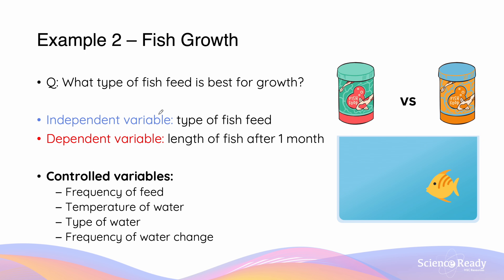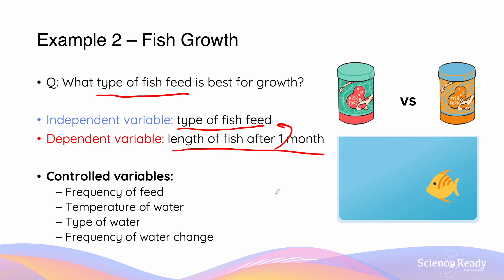In this scenario, we are going to be investigating the type of fish feed as our independent variable. What we are going to be measuring is the length of the fish after one month — that's our dependent variable, which is going to depend on the type of fish feed which was used. All other variables therefore become controlled variables: the frequency of the feed, temperature of water, the type of water, and the frequency of water change.